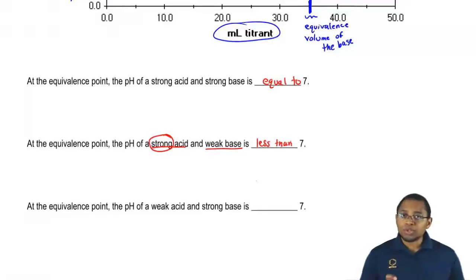In the first example, they both were strong, so we wind up with a draw, which means neutral. That's why the pH is equal to 7.